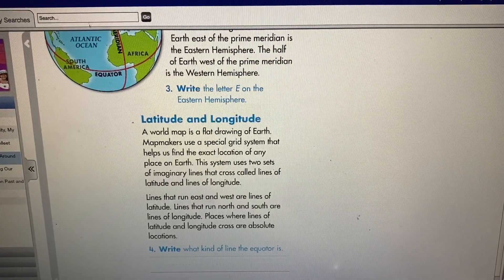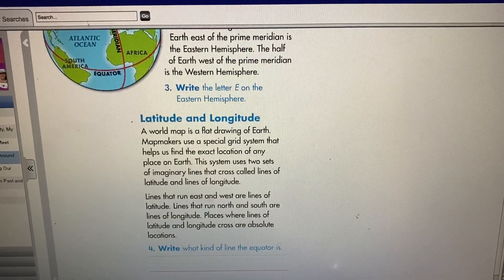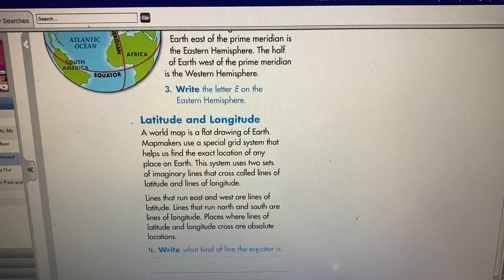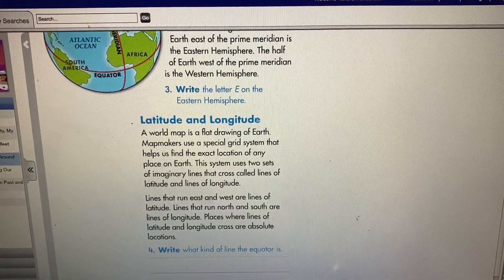Lines that run east and west are lines of latitude. Lines that run north and south are lines of longitude. Places where lines of latitude and longitude cross are absolute locations.